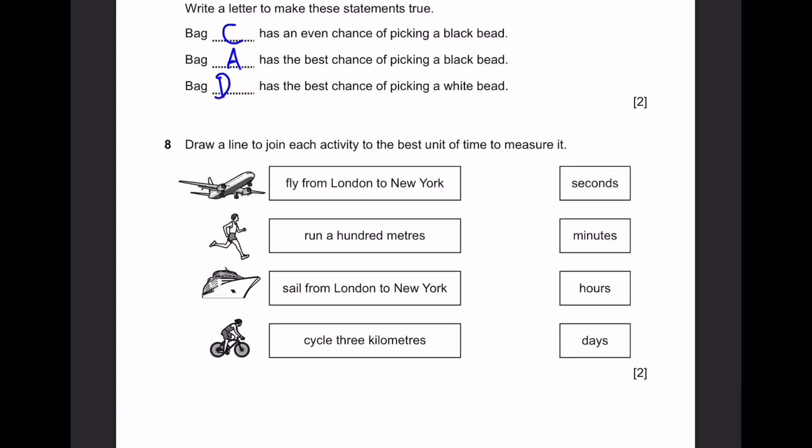Question 8. Draw a line to join each activity to the best amount of time to measure it. Fly from London to New York. Of course it will be hours. Run 100 meters. Seconds. 100 meters is finished in maybe 20 seconds also. It's possible. Sail from London to New York. Days of course. Sailing takes a long time. Cycle 3 kilometers. Minutes. It doesn't take too long but not that short as days and seconds.